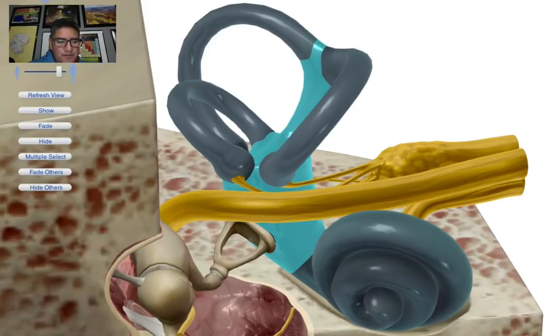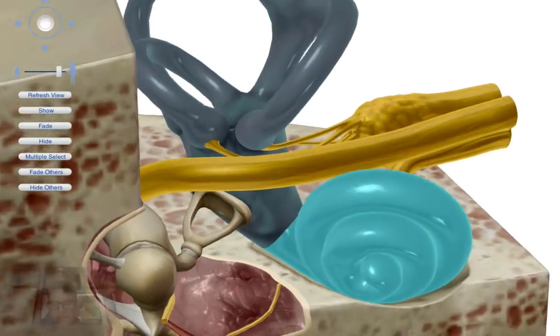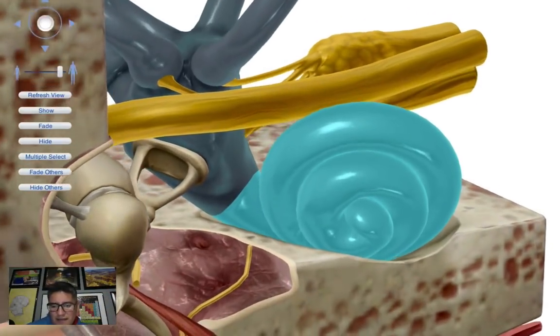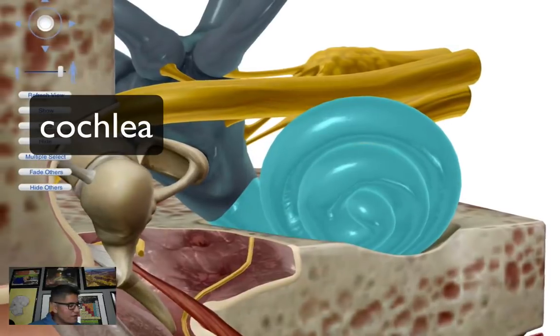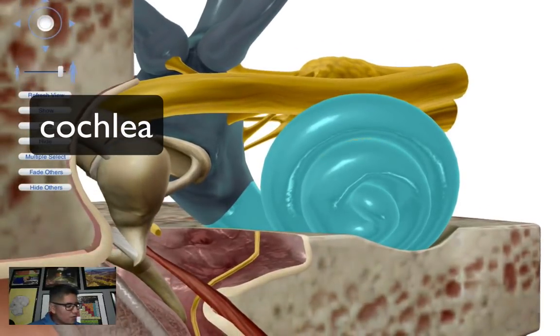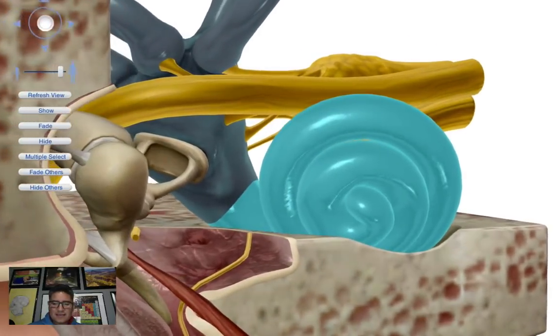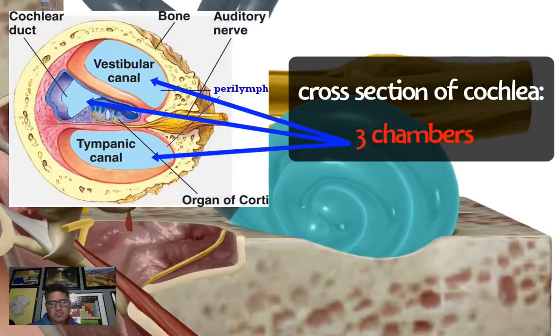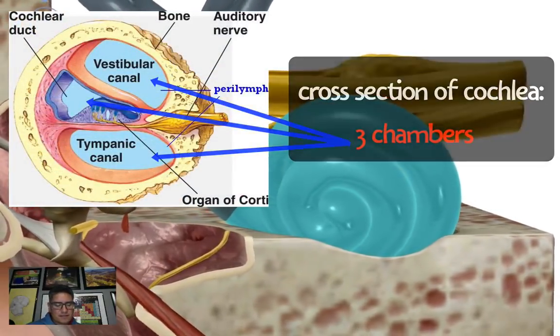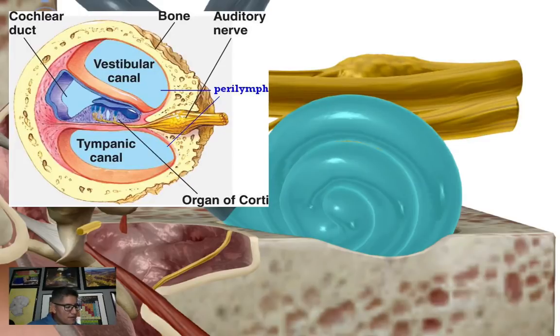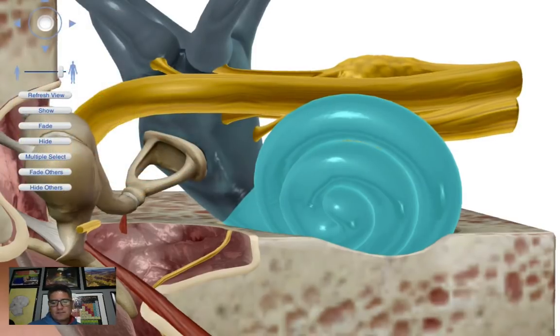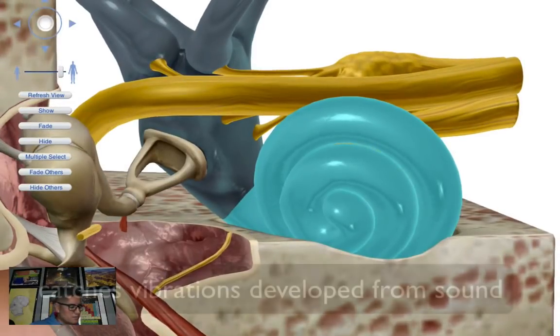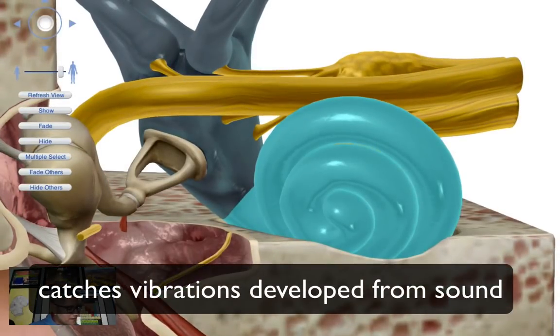The final part of our inner ear is our snail-looking aspect here called the cochlea. The cochlea is the organ for hearing. As you can see, it's a coiled tube, and inside this coiled tube there are three fluid-filled chambers. The inner ear is essentially filled with all this fluid that catches the vibrations. The cochlea specifically catches vibrations for sound.